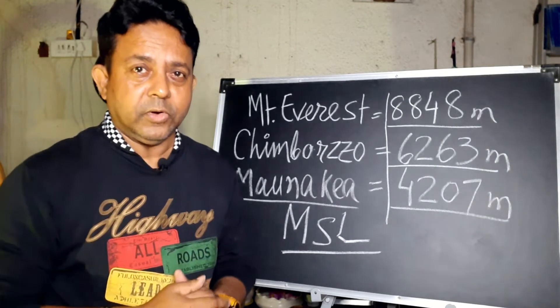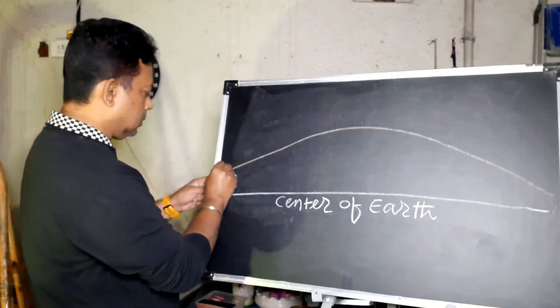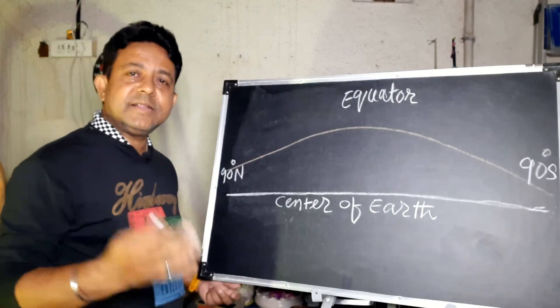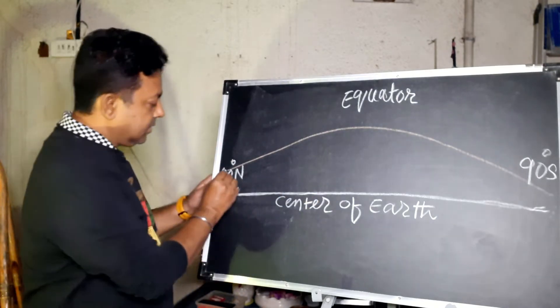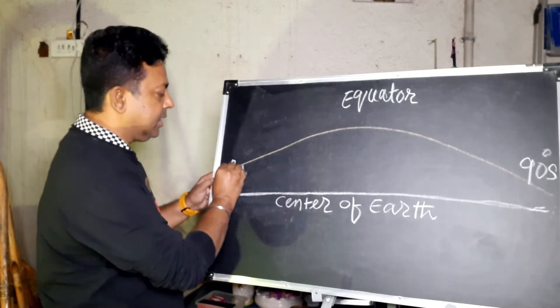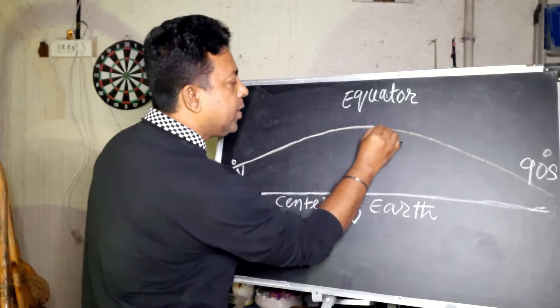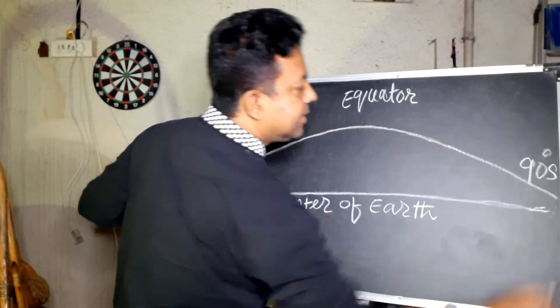So let me draw it for you. So let's take the center of the Earth as a flat piece of line. And we are at 90 degree North, that is your North Pole. And from here, this is the Earth's surface line at equator, it is bulging out, and at the South Pole again it is going down.